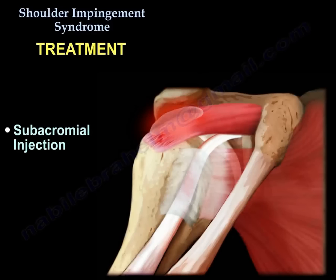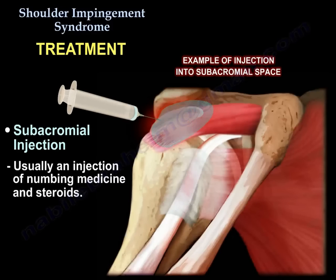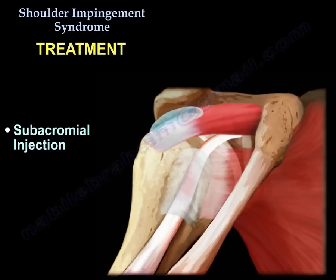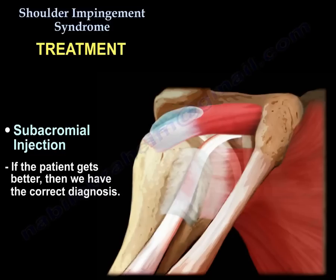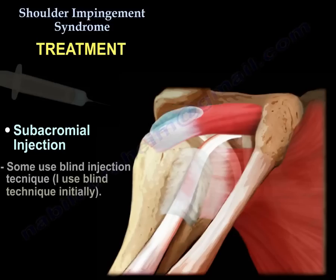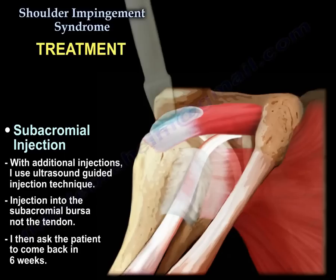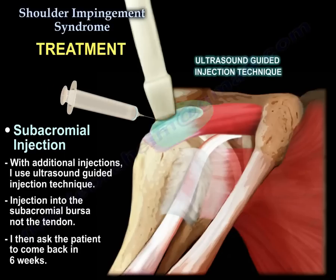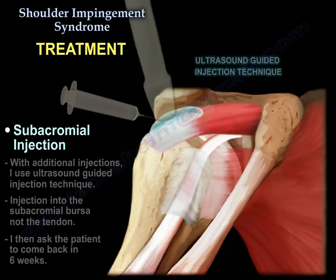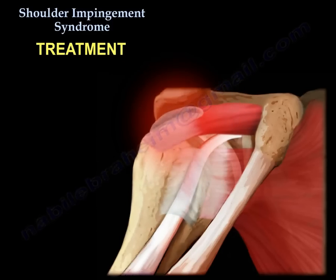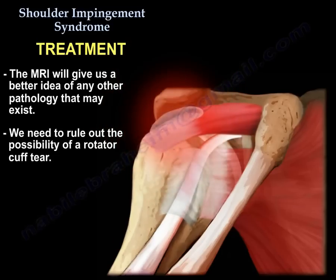Then we give the patient a subacromial injection — usually numbing medicine and cortisone. The cortisone decreases inflammation, and if the numbing medicine works and the patient gets better, we have confirmed the correct diagnosis. I use a blind injection the first time, but after that I use ultrasound-guided injection directly into the bursa. I ask the patient to return in six weeks and repeat the injection. If the patient is not doing well at that point, we dig deeper and get an MRI to identify any other pathology, including ruling out a cuff tear.